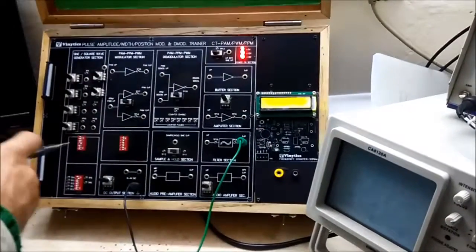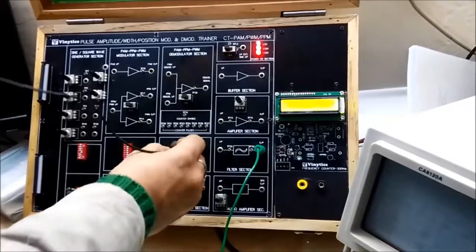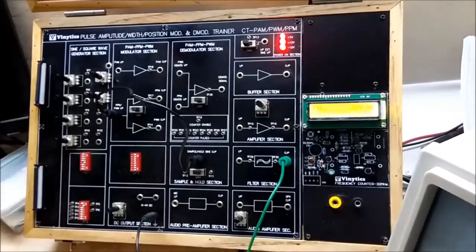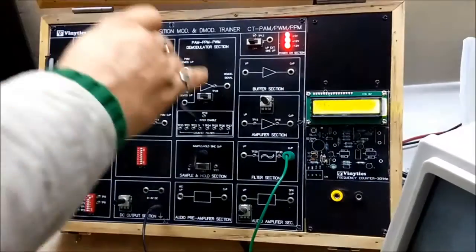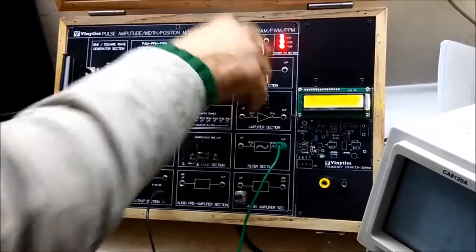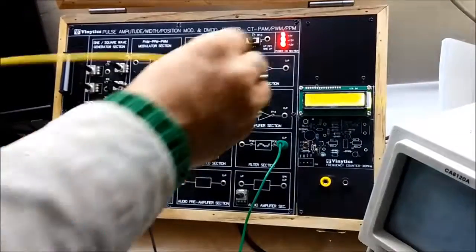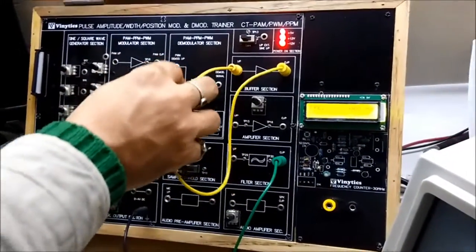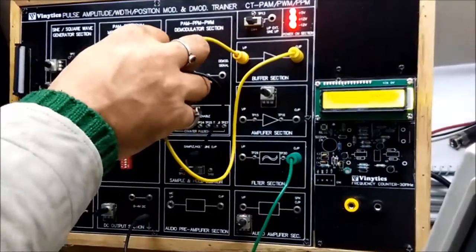As explained earlier, first we will give the output of the waveform to our modulation section and then with respect to our experiment, like right now we are doing PWM, will give the output of PWM to the buffer input and the output of buffer will be given to respective PWM output.